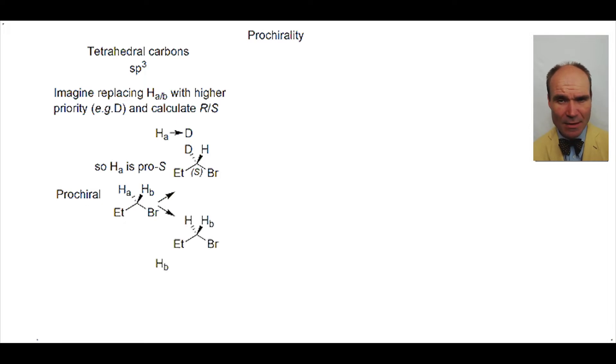Now what about HB? Well if we change HB to deuterium, the consequence is that the resulting stereogenic center is R. Thus HB is Pro-R. The imaginary deuterated molecules are enantiomers of each other.